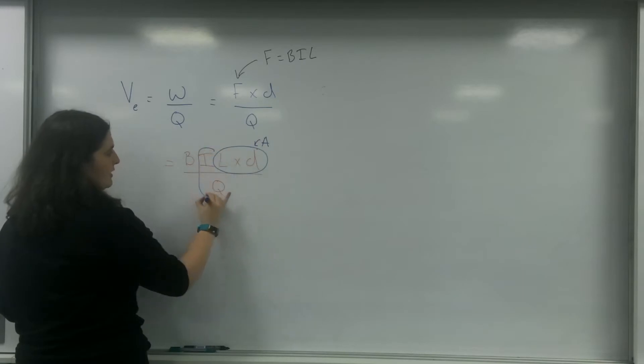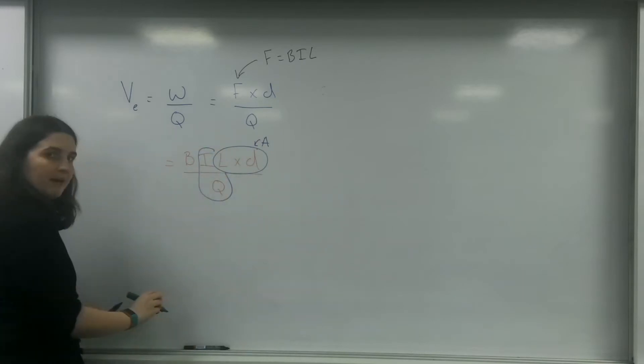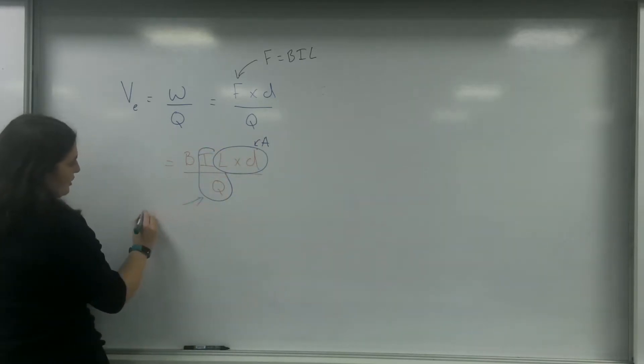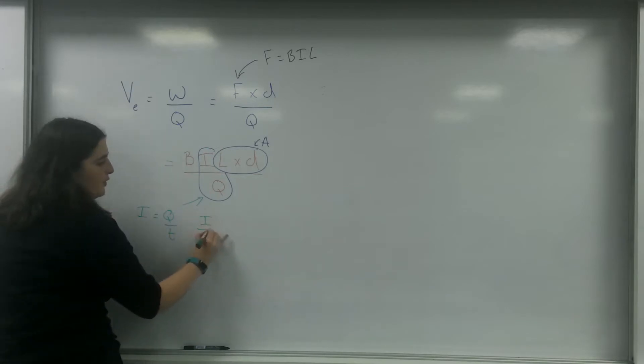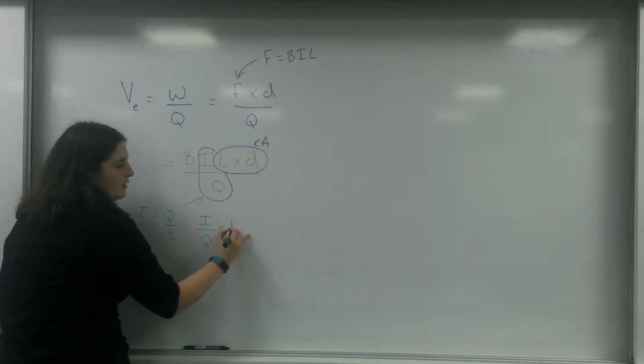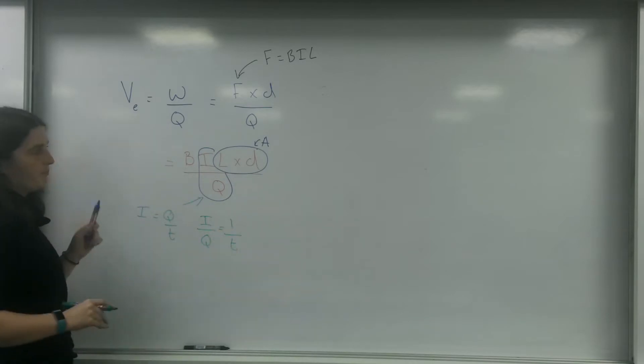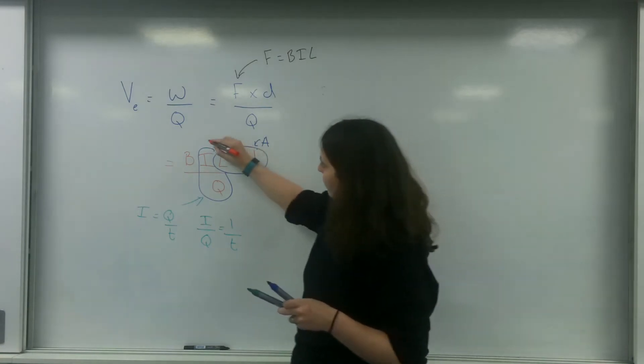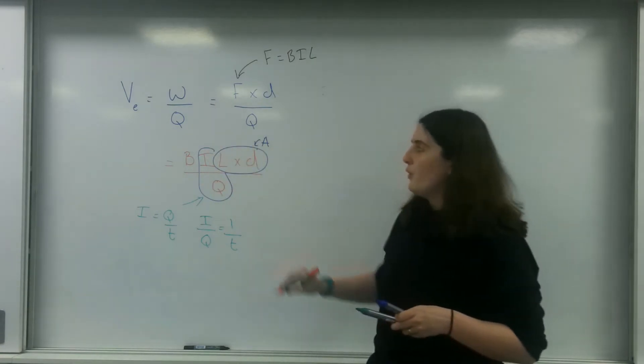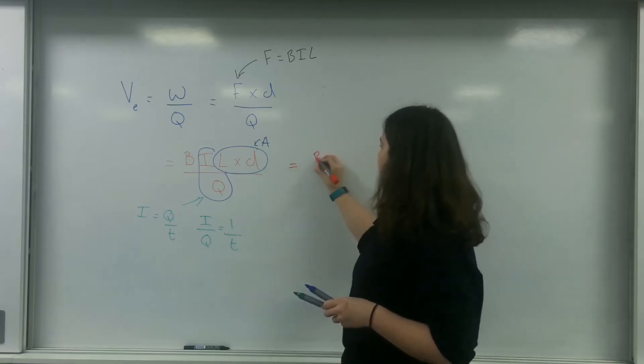This thing comes back to my idea that current is the rate of flow of charge, which means that I divided by Q is 1 over time. So I can replace this bit here with area and I can relate this bit here to 1 over time. So I end up with B times A over time.